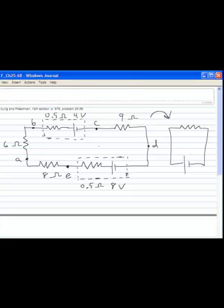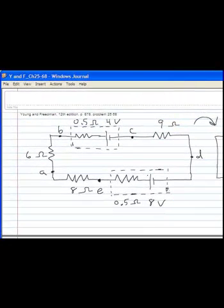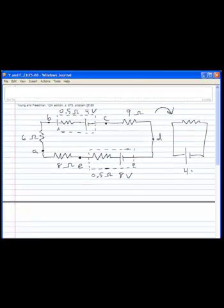And so we've got a 4 volt battery pushing current in the counter clockwise direction and an 8 volt battery pushing in the clockwise rotation. So that leaves me with 4 volts in the clockwise direction.